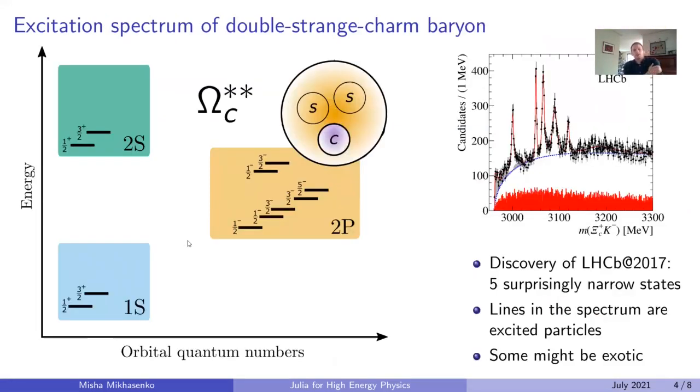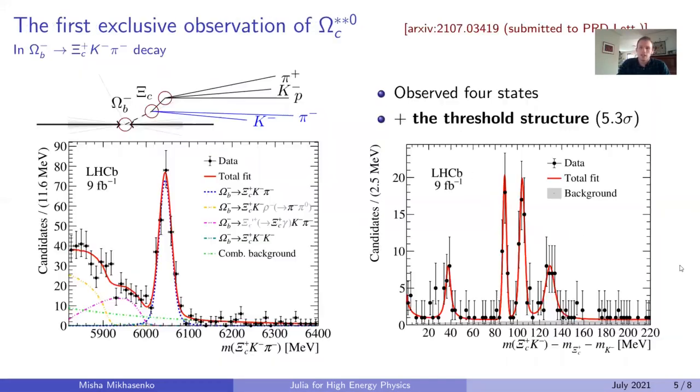Omega-c baryon, which I studied recently, is the state similar to proton, while containing two strange quarks and one c-quark. The excited spectrum of Omega-c might hint a mixture of states with exotic components. The first observations of the excited states was in 2017, and the new analysis just appeared on the archive.